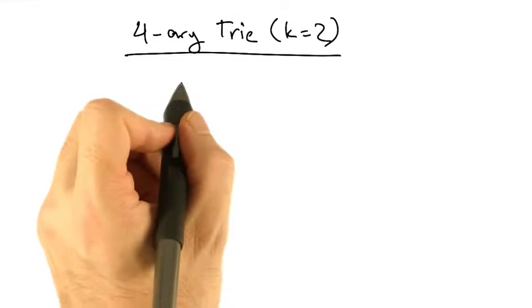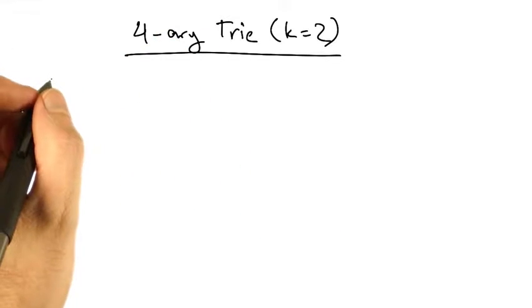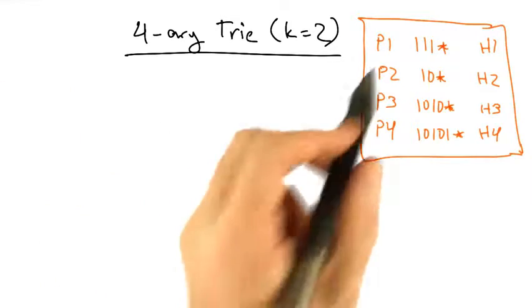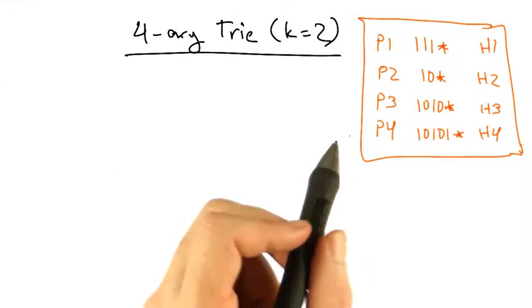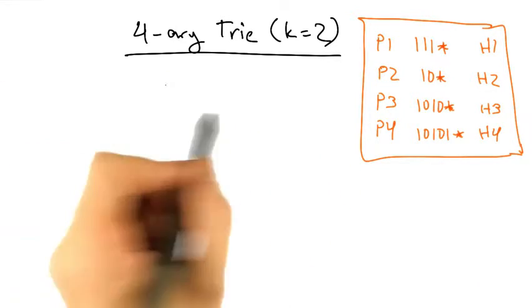Let's take a look at the 4-ary trie, where k equals 2. Suppose we have the same forwarding table as before. But now, each node in the trie is responsible for resolving 2 bits.